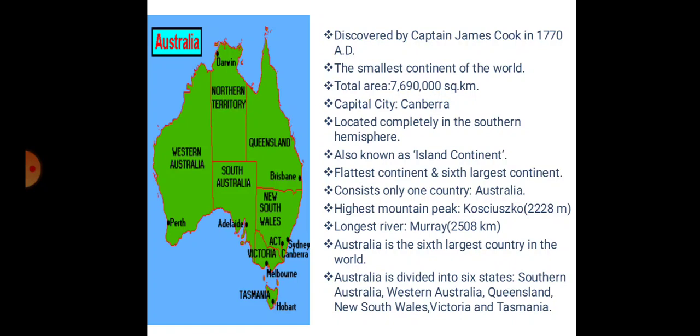Australia is divided into six states: Southern Australia, Western Australia, Queensland, New South Wales, Victoria, and Tasmania.